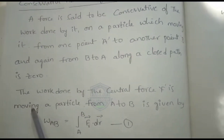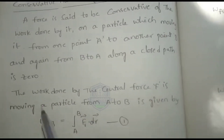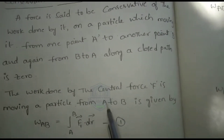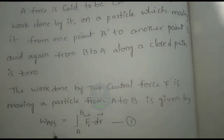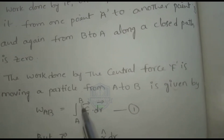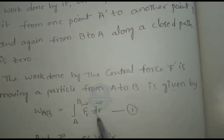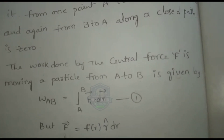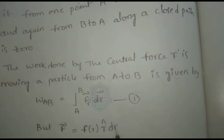The work done by the central force F in moving a particle from A to B is given by the integral of F bar, where the force is given by F bar equal to F of r times r cap, dotted with dr.